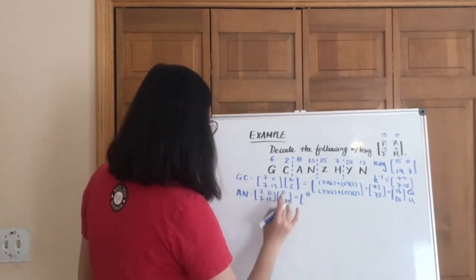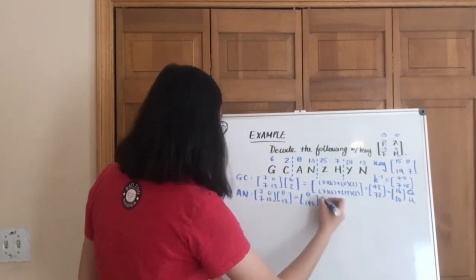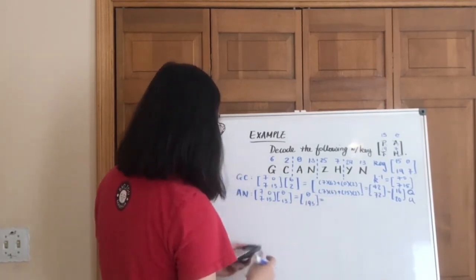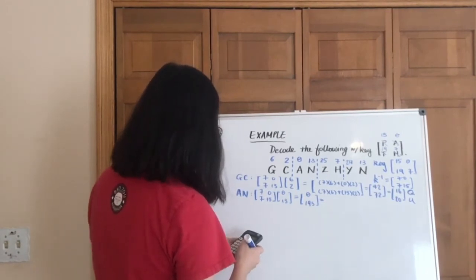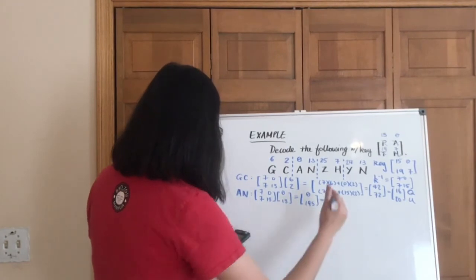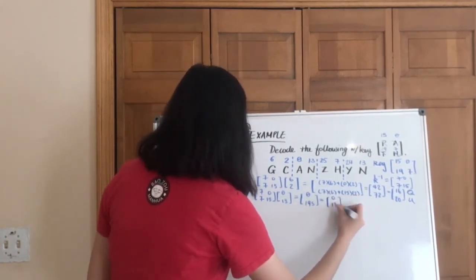And then the bottom will be 7 times 0, plus 15 times 13, which is 195. Okay. So that's going to give us 195. Let's see. 0 and 13. So that's A and N.